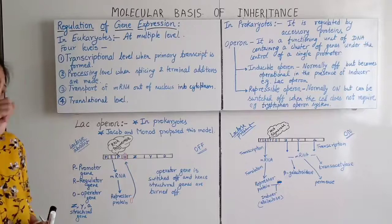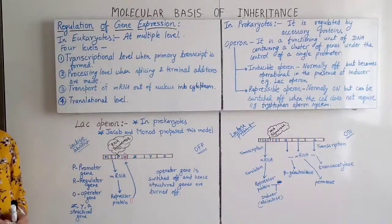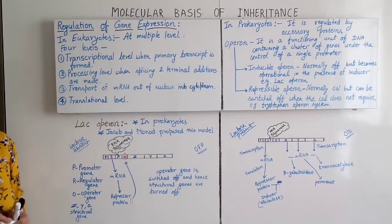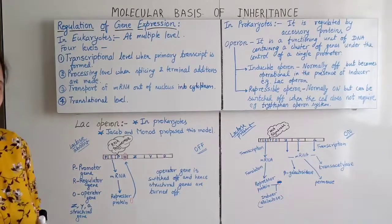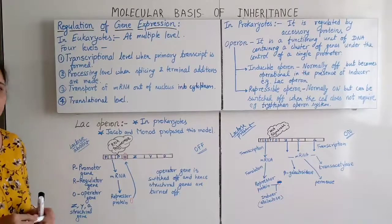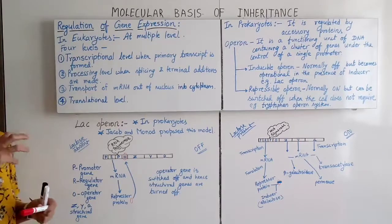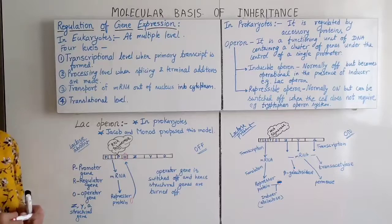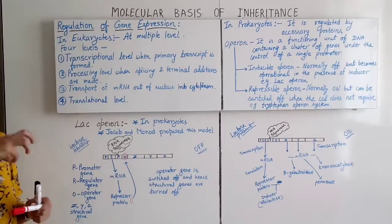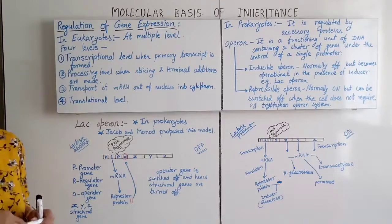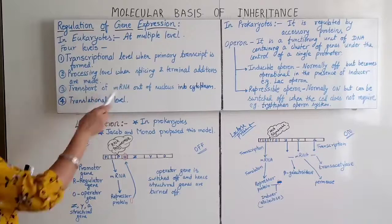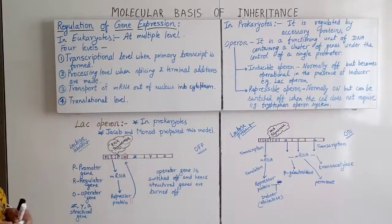Remember from the protein synthesis video — splicing is done when the newly formed mRNA is prepared. At that time it has introns and exons, and the removal of those introns is called splicing. So the processing level involves splicing and terminal additions.